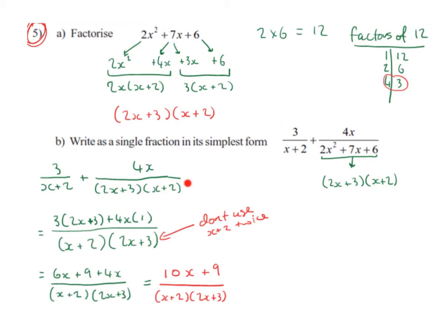And then 2x plus 3 multiplied by x plus 2 divides into x plus 2 multiplied by 2x plus 3 exactly once. So it's going to be 4x multiplied by 1.